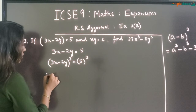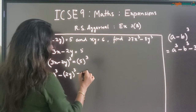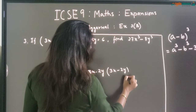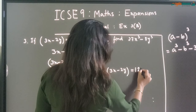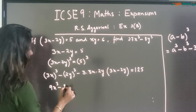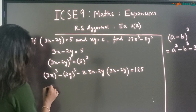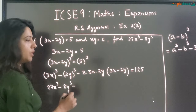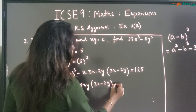Now let us expand A minus B whole cube: A cube minus B cube minus 3 into A into B whole into A minus B, and that is equal to 5 cube, which is 125. So 3X whole cube is 27X cube, minus 2Y whole cube is 8Y cube, minus 3 into 2 into 3 is 18, so this is 18 into XY into 3X minus 2Y, and that is equal to 125.